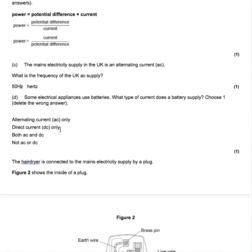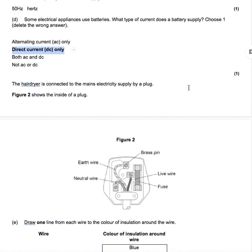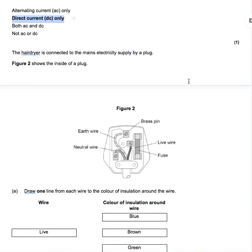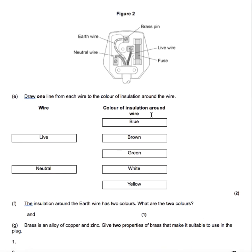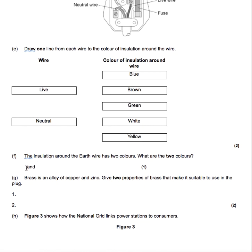Some electrical appliances use batteries. What type of current does the battery supply? Only direct current from a battery. The hair dryer is connected to the mains electricity supply by a plug. Draw a line from each wire. Live is brown. Neutral is blue. The insulation around the earth wire has two colours, green and yellow in either order.